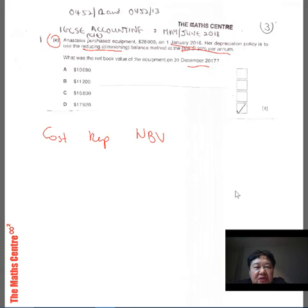So the first year, which is 2016, the cost is $28,000. Now at 20%, so $28,000 times 20% will be $5,600. So the netbook value will be $28,000 minus $5,600. That will be $22,400.